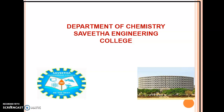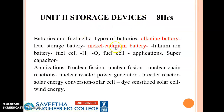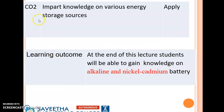Good morning students and welcome back. Today we are going to look into unit 2, discussing storage devices — specifically the alkaline battery and nickel cadmium battery. The course outcome for this lesson is to impart knowledge on various energy storage devices, at Bloom's taxonomy apply level. The learning outcome is that students will be able to gain knowledge on alkaline battery and NiCAD battery.